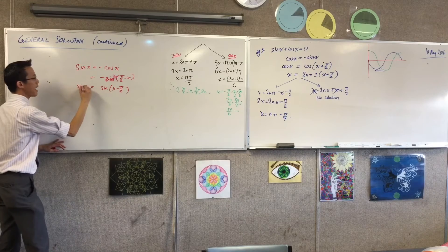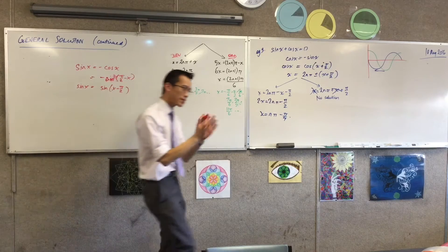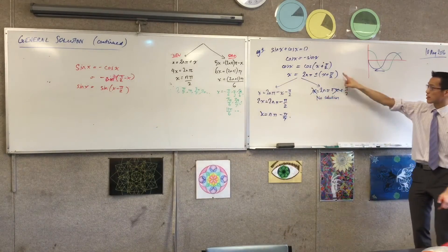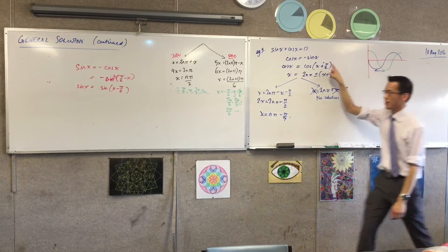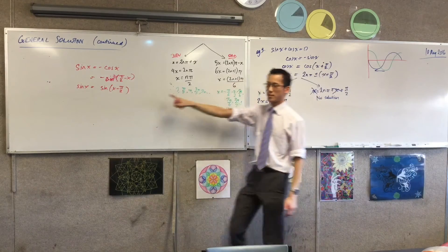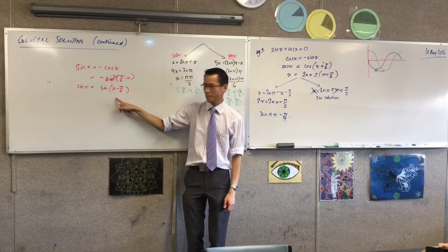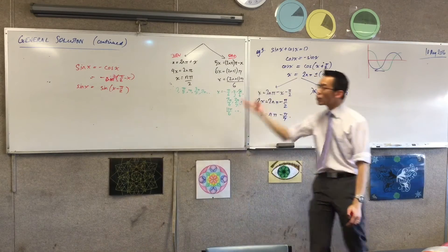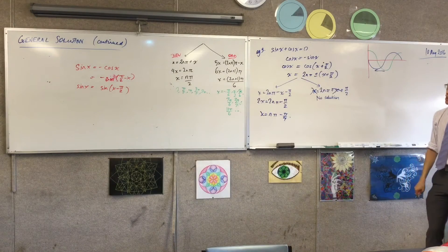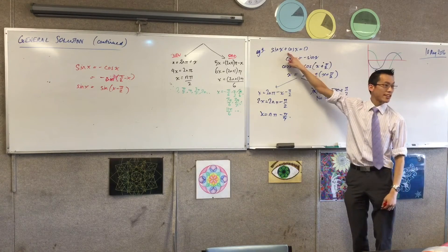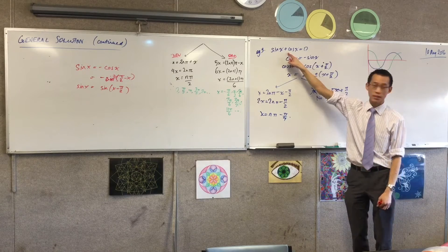Now you should see, without me even finishing it, there's a marvelous symmetry to this way of approaching the solution. Look at this line very carefully versus this line — do you see how symmetrical they are? I could go ahead and find a solution from there, but right at the beginning you suggested to me that this can be done by auxiliary angle. I can do this by auxiliary angle.